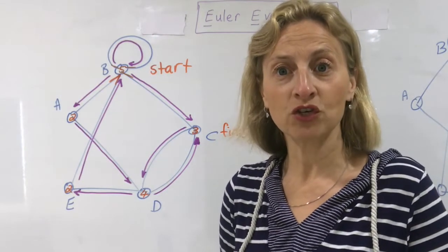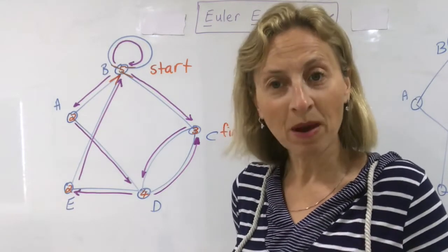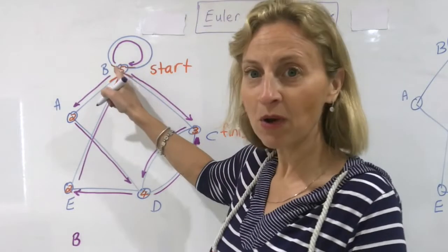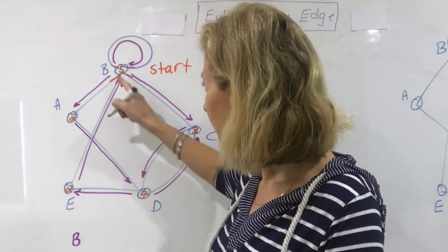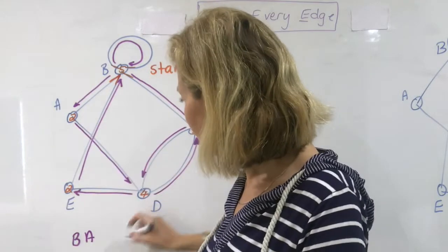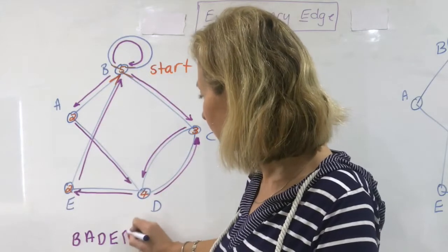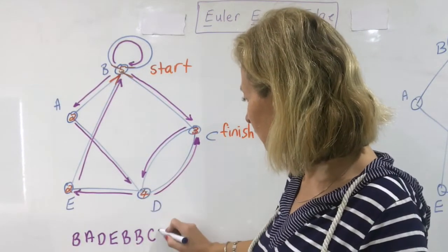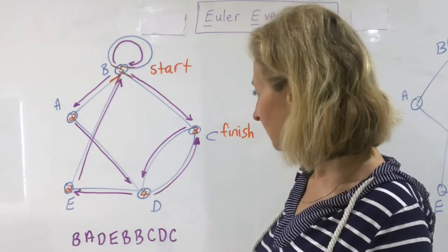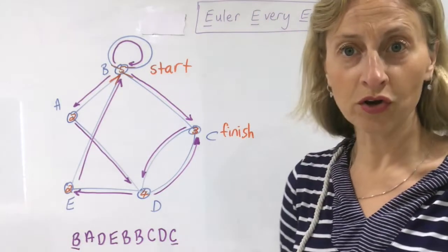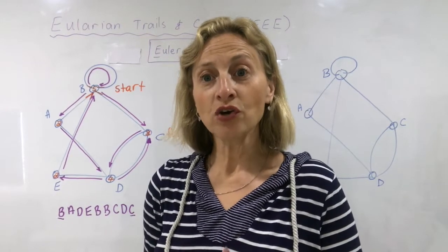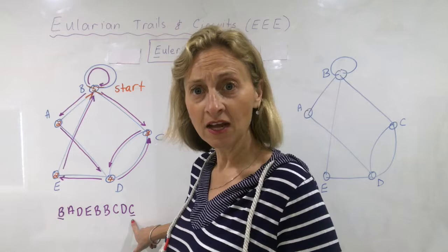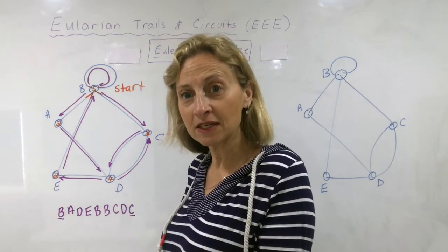We need to write down what the Eulerian trail is by writing the letters we visited in the order we passed through them. I started at B — which had the odd degree of five — then went to A, then D, then E, back up to B, around the loop at B, down to C, then to D, and back to C. I started and finished at my two odd vertices. If you chose a different route, that's fine — there are other options, and you and your friend might get different but equally correct answers.